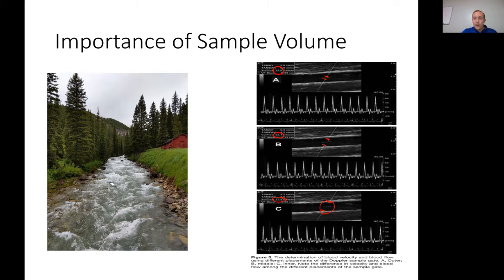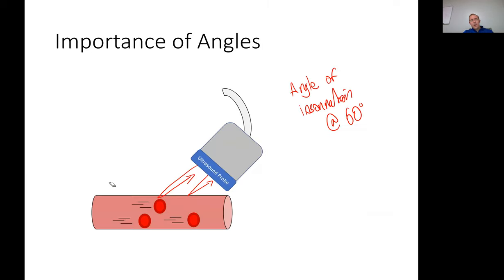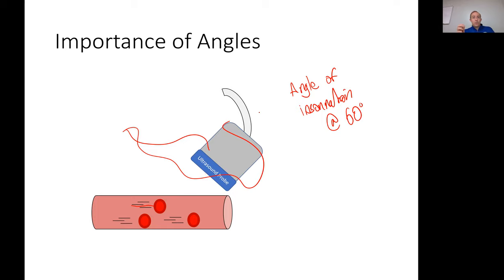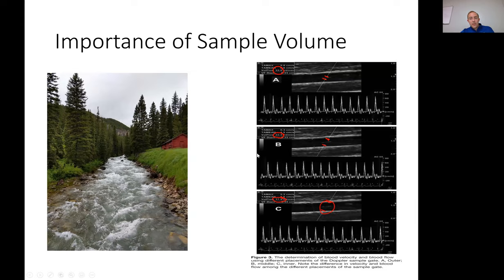One last point: when measuring blood velocity, the assumption is that all movement detected by the sound waves is due to blood flow. If you're jiggling the probe and moving it around, the sound waves move not because of blood velocity but because you're shaking. This adds artificial movement that the computer interprets as very fast blood. You have to hold the ultrasound probe completely still to get accurate data. To summarize: angle of insonation and angle correct must both be set to 60 degrees, sample volume must maximize artery coverage, and keep the probe still. Ultrasound takes a lot of practice, so keep working at it.